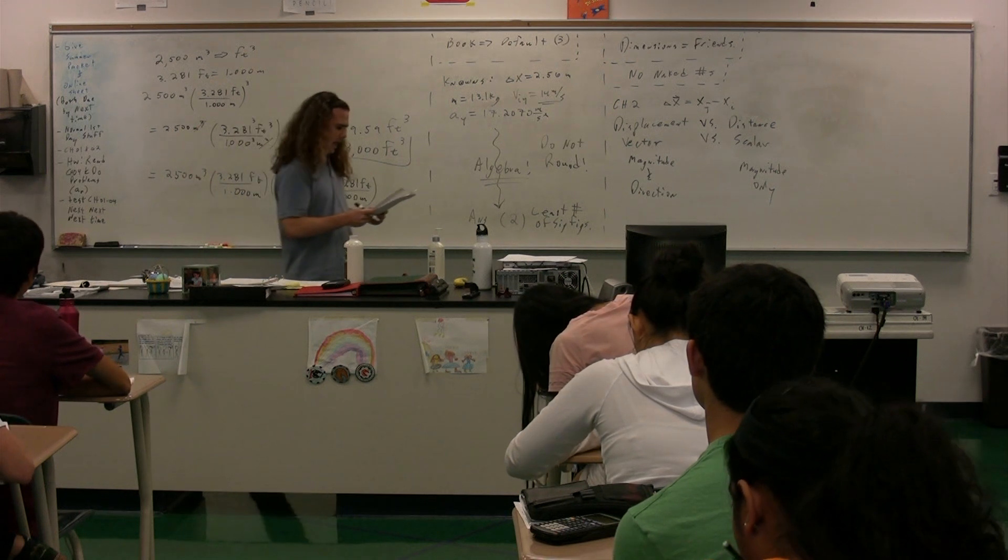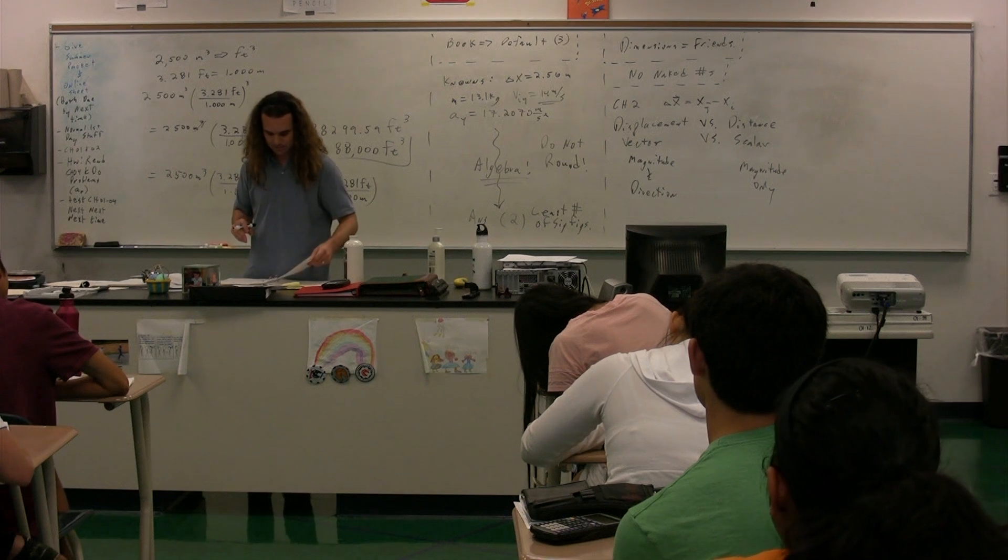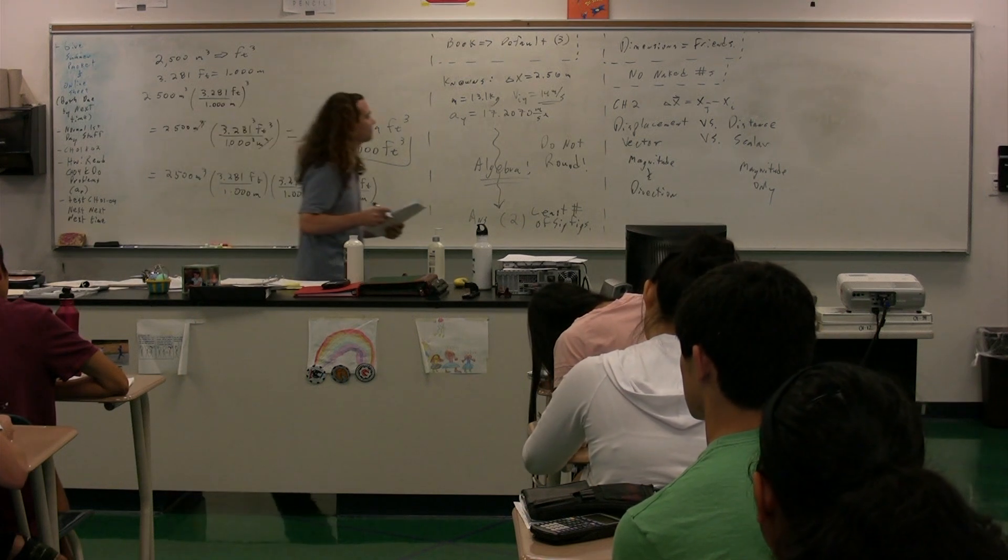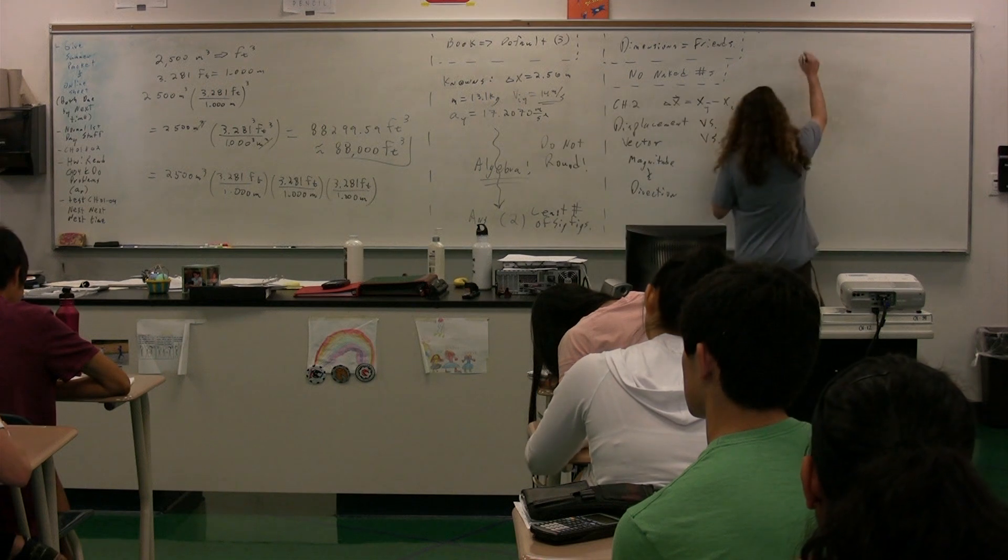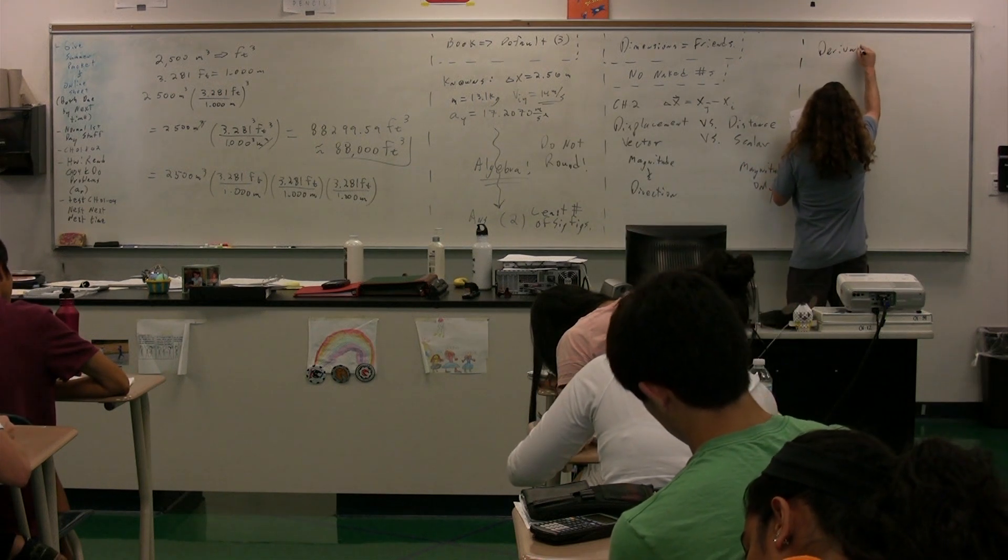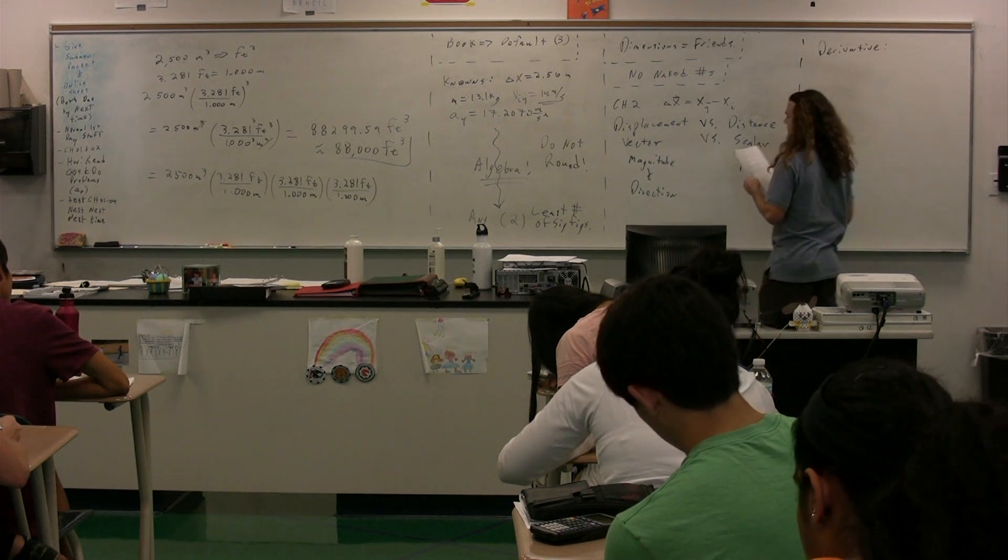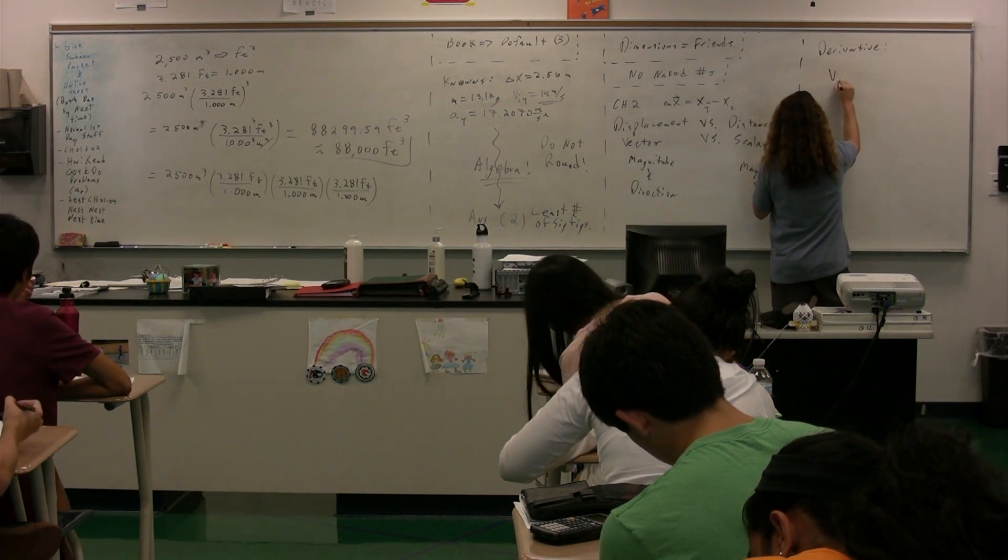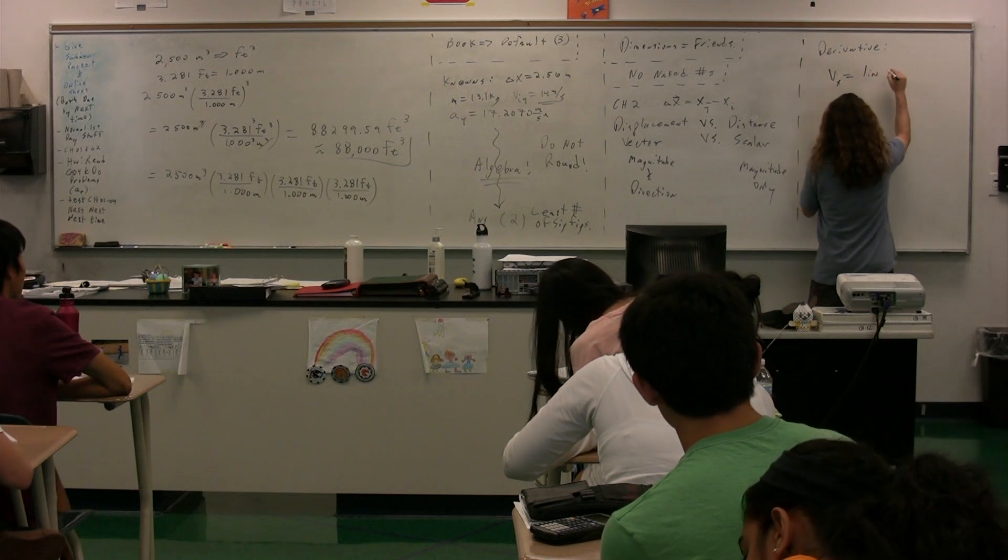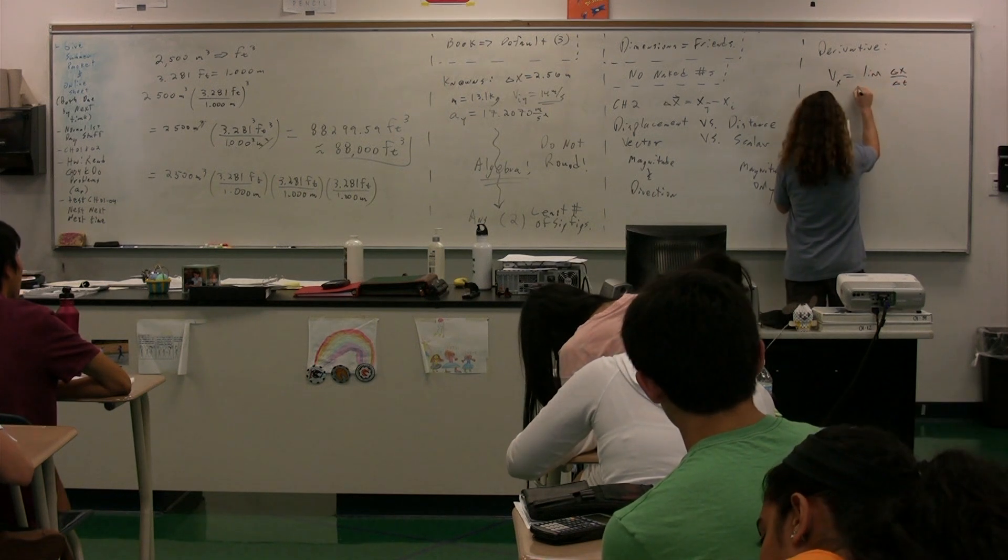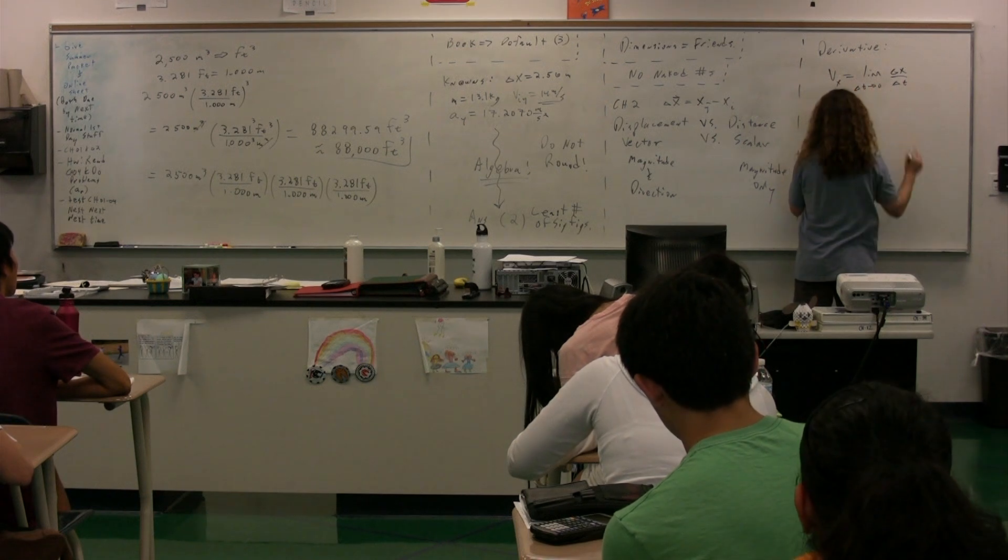Okay. So, next, the concept of a derivative. It looks like this. The velocity in the x-direction by definition is equal to the limit of delta x over delta t as delta t goes to zero. Graphically, it looks like this.